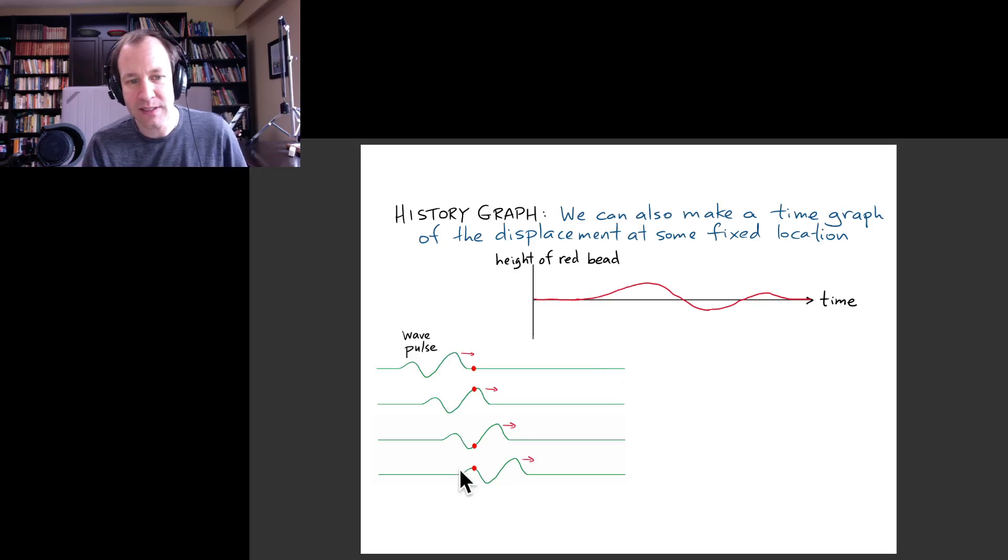From this series of snapshot graphs, we can make this history graph. That basically just keeps track of what one point on the wave is doing.